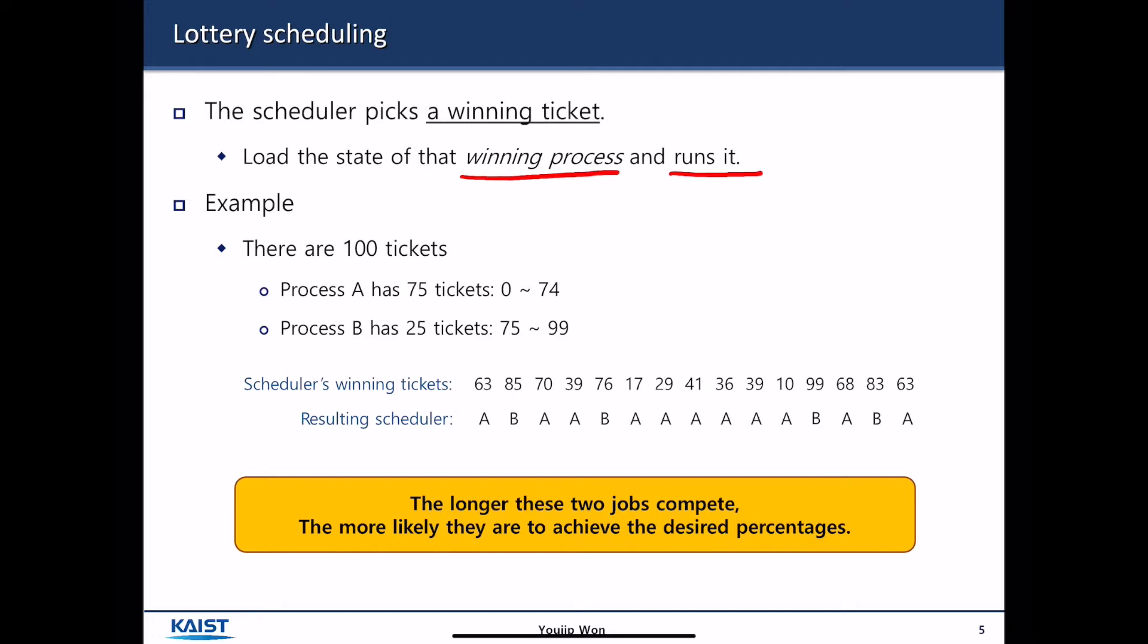For example, let's say there are 100 tickets. Process A has 75 tickets, and process B has 25 tickets. So, process A has 75% chance of getting CPU, and process B has 25% chance of getting CPU. How can we implement that? The easiest way is to define a random number from 0 to 99.